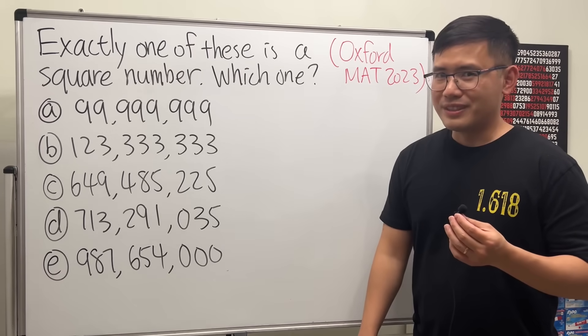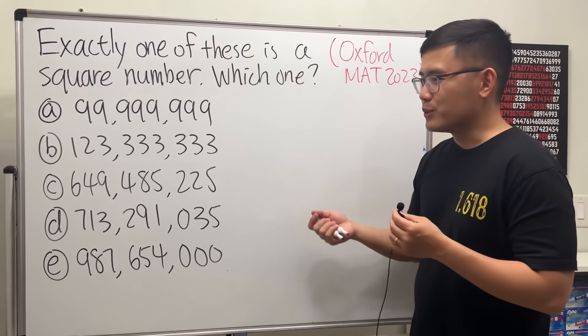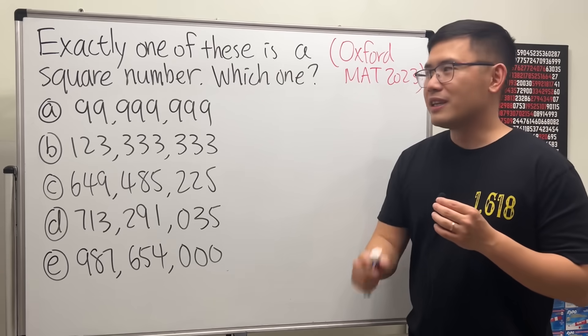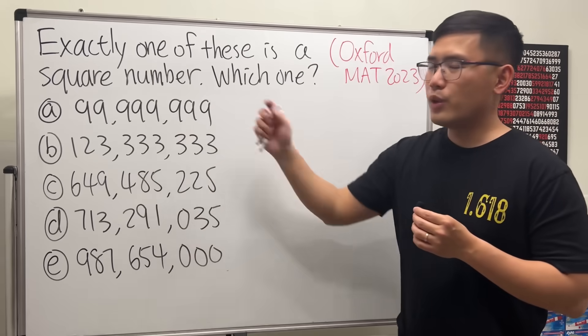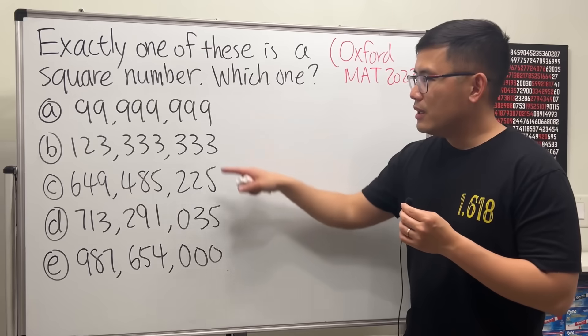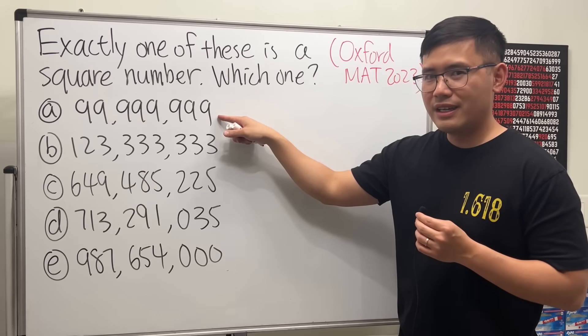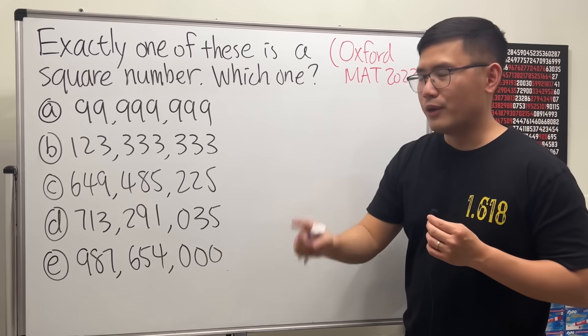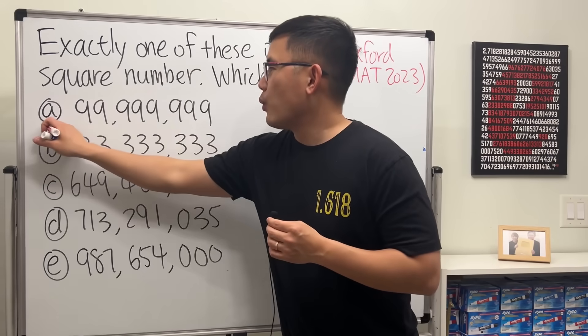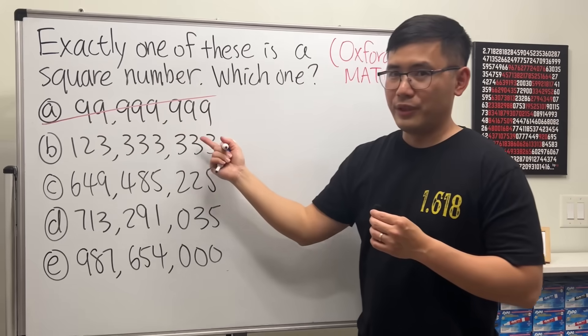So this is how we are going to do it. I'm not going to just square each option and try to figure out the result, no. Because we know exactly one of these is a square number, so let's try to rule out the other four. Start with option A: is this a square number? And the answer for that is no, it's not possible. Why? Because in fact this is one less than 100 million.